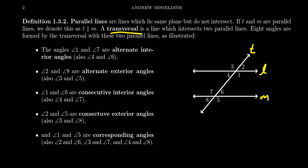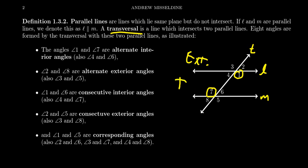We label these so we can talk about families of angle pairs in this diagram. Angles one and seven are alternate interior angles — interior in the sense that they're inside the strip of the plane formed by the parallel band, and alternate meaning they're on the opposite side of T. So one and seven are alternate interior angles. Likewise, four and six are alternate interior angles — they're on the opposite side of the transversal but interior to the parallel band.